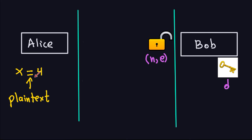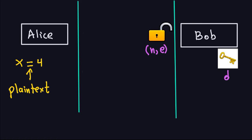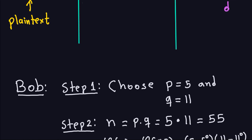You can think of x = 4 as a binary number; for this example we'll use decimal notation. X represents a sequence of zeros and ones. Bob has to compute his public and private key so Alice can grab the public key, encrypt the message, and send it through the insecure channel. Let's go through what Bob does to create his keys.